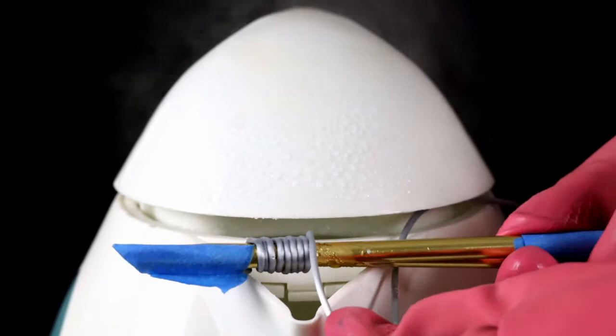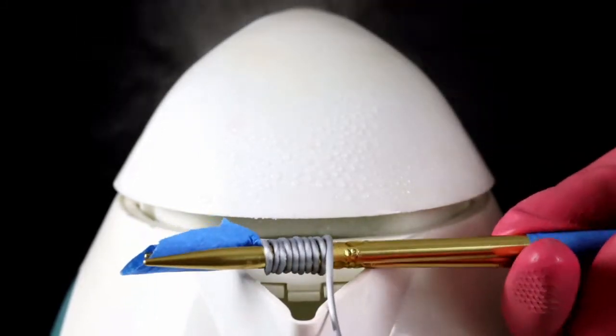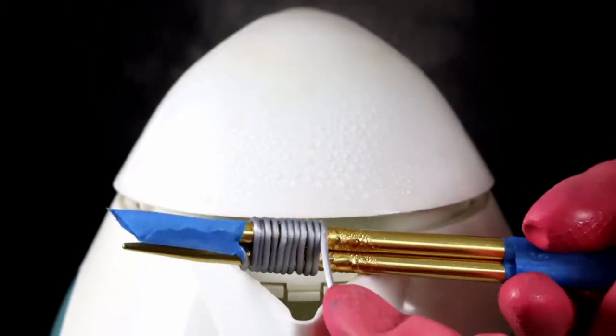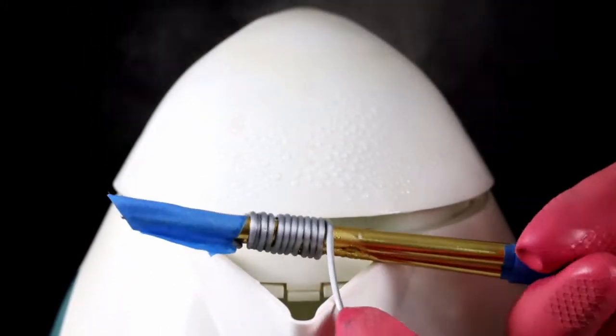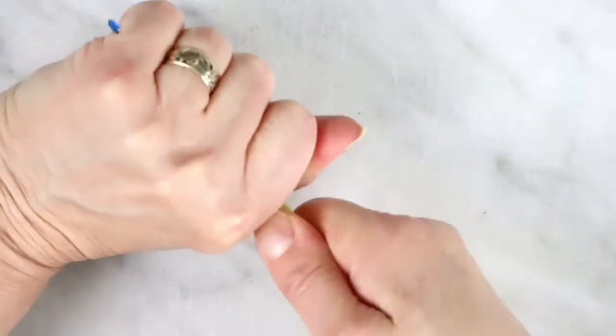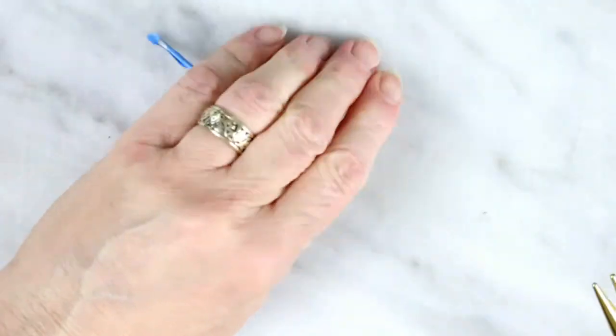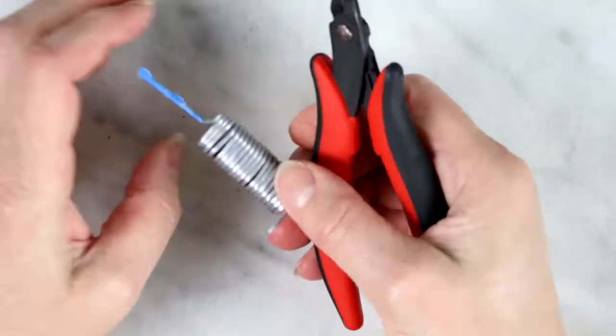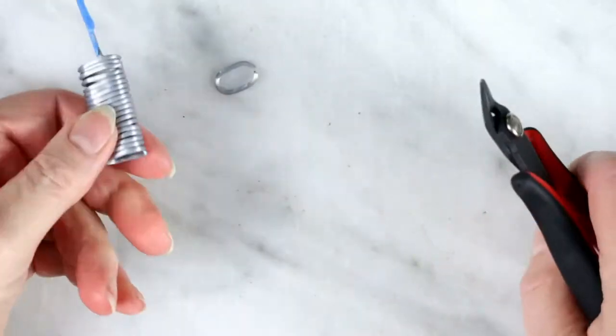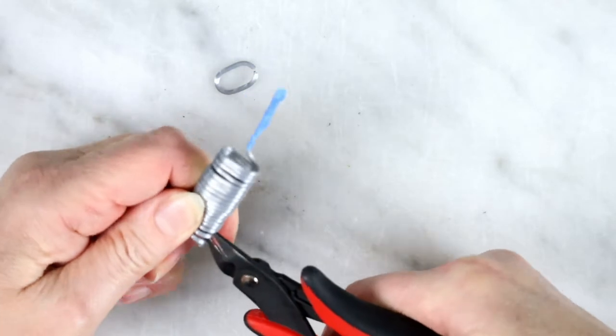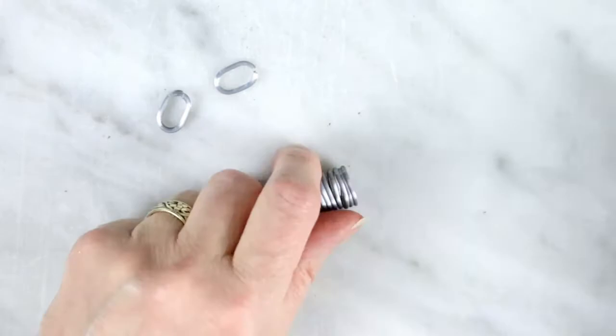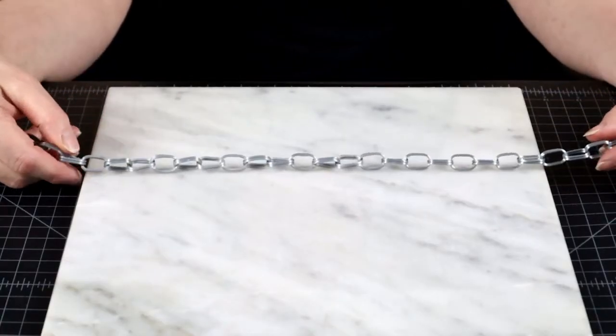If you would like oval links, then use two dowels or knitting needles taped together. Wind as usual. And of course you can cut them as either singles or multiples as desired. Until you have an oval chain.